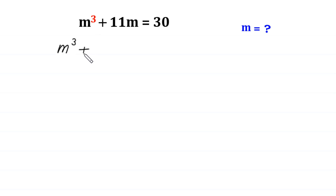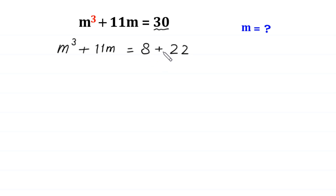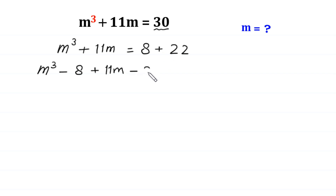We write m cubed plus 11 times m equals 30. We can split this 30 as 8 plus 22. Now we move the 8 and 22 to the left side: m cubed minus 8, plus 11 times m minus 22 is equal to 0.